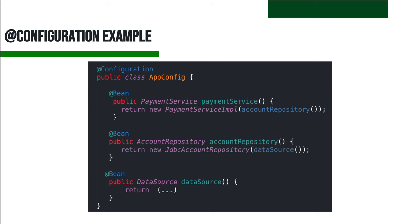Spring provides component stereotypes to classify classes as Spring components. The @Component annotation can be used as a general component annotation, indicating that a class should be initialized, configured, and managed by the core container. Additionally, @Repository, @Service, and @Controller serve as meta-annotations for @Component, allowing further refinement. Custom stereotype annotations can and should be defined to support general architecture principles.